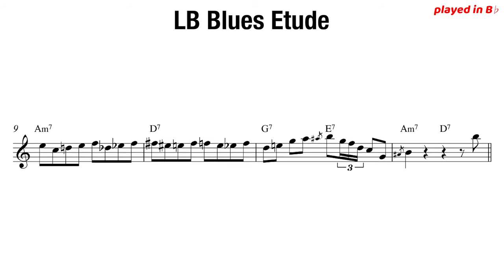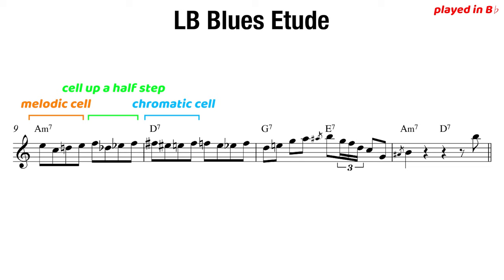Another section I want to point out is playing these cells in chromatic sequences, like in measure 9: F, D-flat, E-flat, F. So in measure 10 on D7, this cell starts on F-sharp, then we play that same cell down a half step starting on F. So F-sharp, F-natural, E-sharp, E, F-sharp — then F, E, E-flat, F. That's that same cell being played in a chromatic sequence.